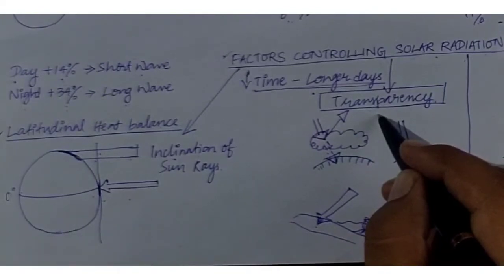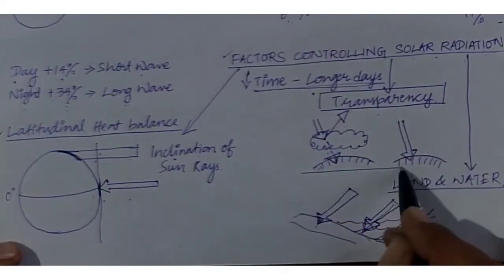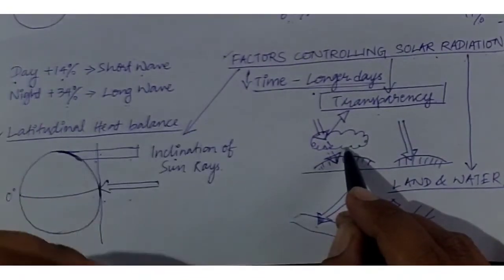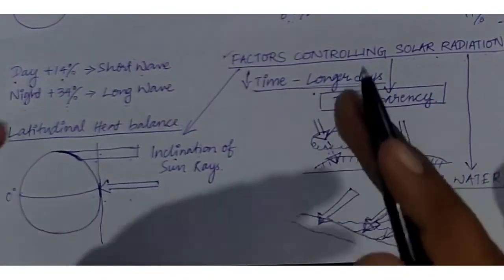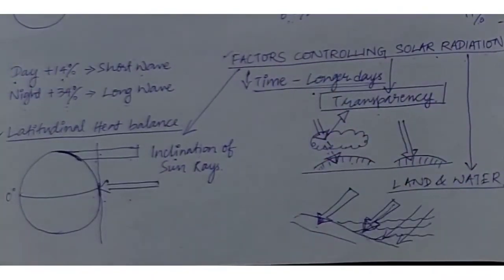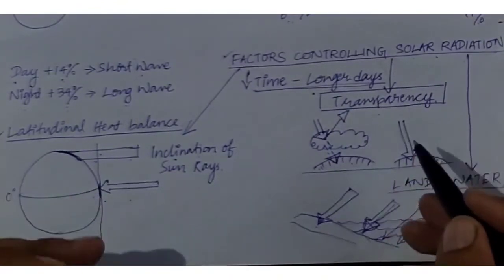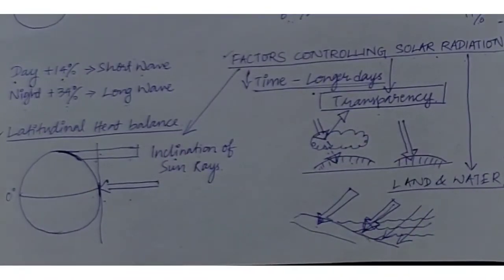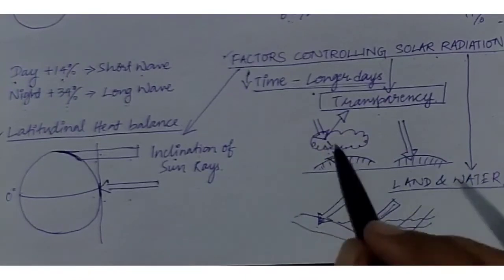The next factor is the transparency of the atmosphere, which plays a very important role in controlling solar radiation. If there is cloud cover, the radiation coming toward Earth will be reflected back — only a partial amount will reach the surface. In the absence of cloud cover, the full amount of insolation or solar radiation will reach Earth's surface. So the transparency of the atmosphere influences the solar radiation received.